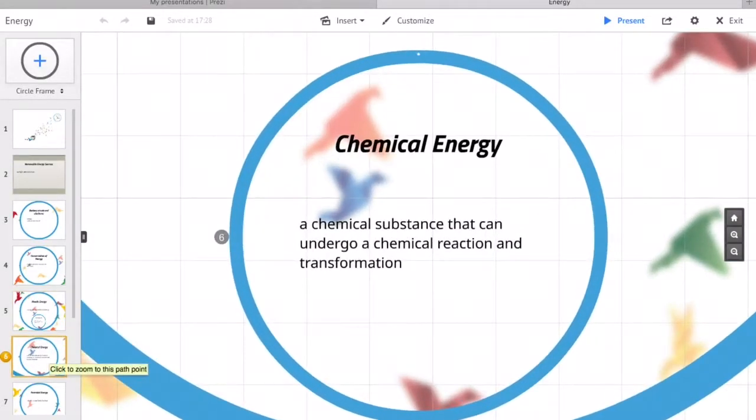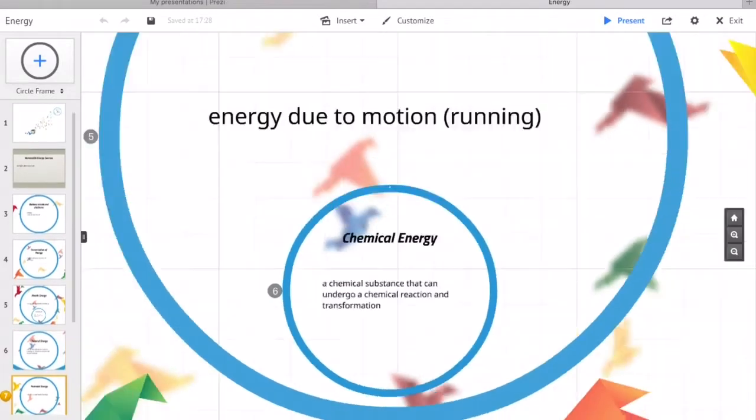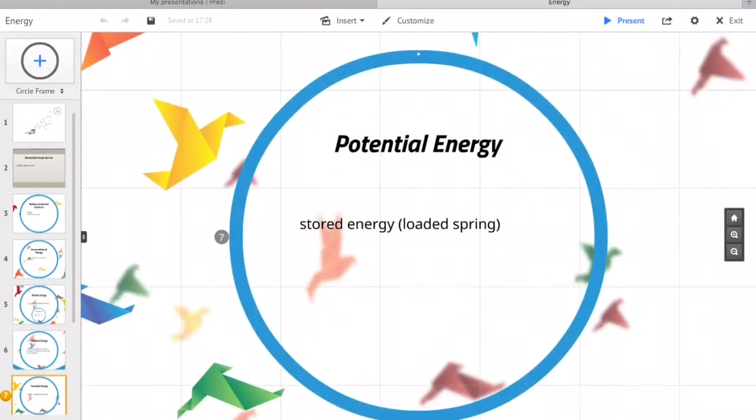Chemical energy is the potential of a chemical substance to undergo a chemical reaction and transformation. Examples include batteries, food, and gasoline. Chemical energy provided by food to accelerate a bicycle would be a great example of chemical energy.